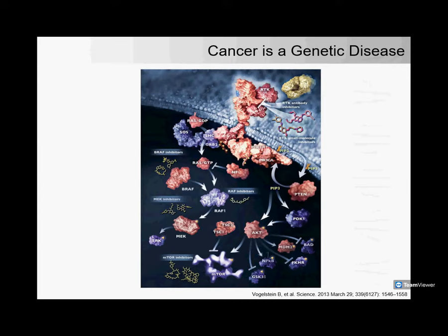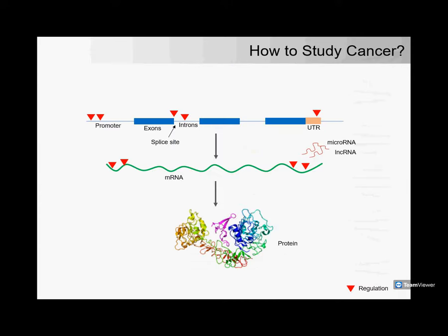If we understand that cancer is a genetic disease, what we want to look for is the underlying genetic alterations. Most studies start off with the central dogma — starting from the DNA sequence, then looking at the transcription process yielding either a coding or non-coding mRNA, and then the various regulatory mechanisms, the translation process, and post-translational modifications that make the protein normal or, in the case of cancer, abnormal.